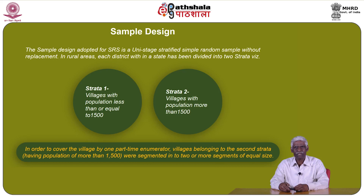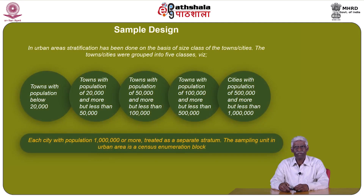The sample design adapted for SRS is a unistage stratified simple random sample without replacement. In rural areas, each district within a state has been divided into two strata: Stratum 1 — villages with population less than or equal to 1500, and Stratum 2 — villages with population more than 1500. Villages belonging to Stratum 2 were segmented into two or more segments of equal size to be covered by one part-time enumerator. In urban areas, stratification has been done on the basis of size class of the towns or cities, grouped into five classes.